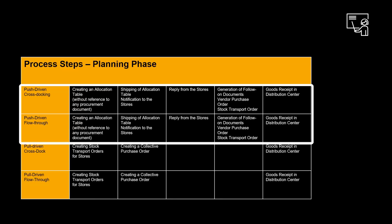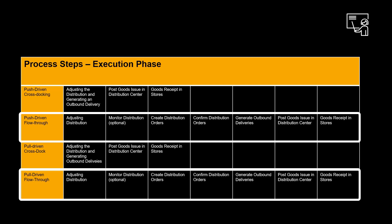The four variants can be divided into a planning phase and an execution phase. The number of process steps varies by process variant, and we go through them in detail in episodes 2 through 5 of this mini-series. Push-driven processes have a couple more process steps, mainly because the process is driven top-down and a feedback loop with the stores is needed. In the execution phase, the flow-through variants have the most process steps, mainly due to the increased flexibility they provide, enabling repacking and value add-ons as part of the flow.